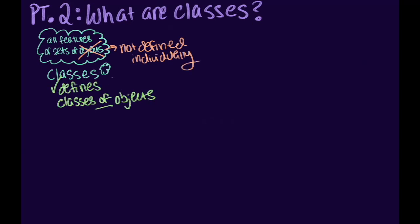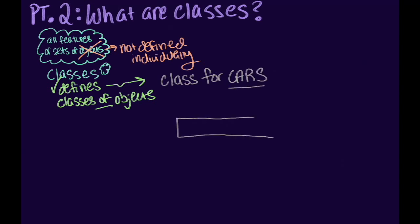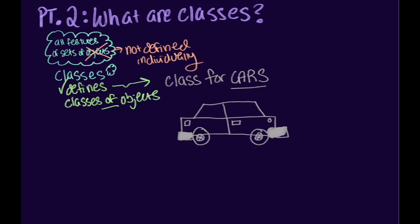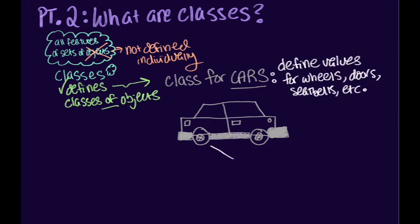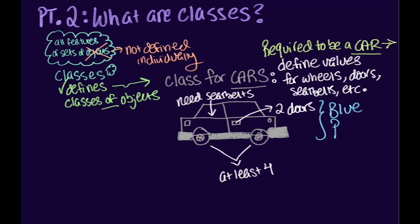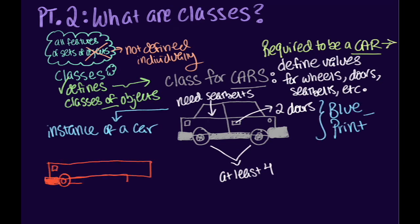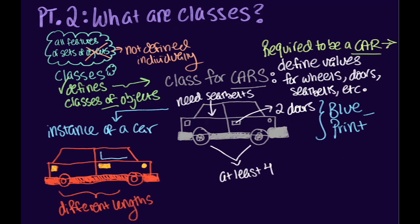For example, you might have a car class that describes features of all cars — having at least four wheels, at least two doors, seat belts, etc. The car class serves as our template, our abstract model for the concept of a car. But to actually have an object that you can manipulate and use through our program, we need to have a concrete instance of the car class.